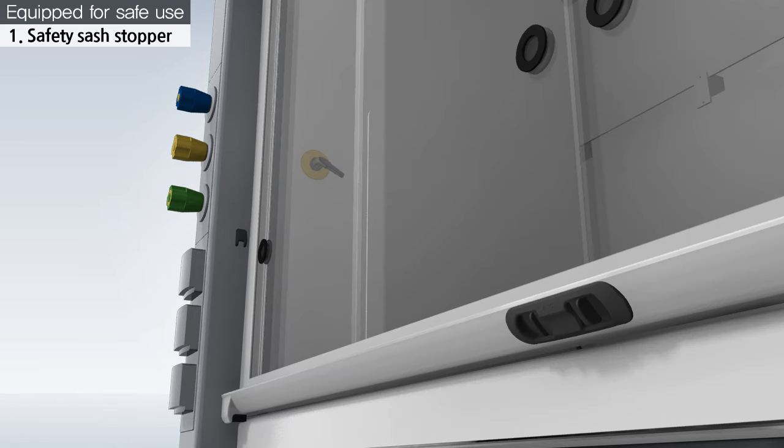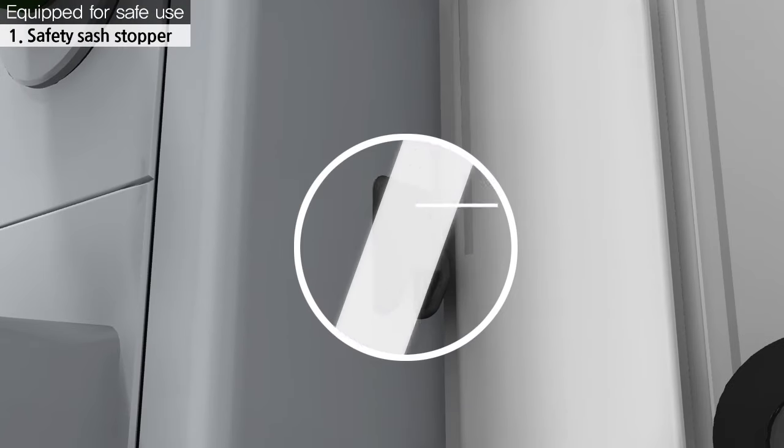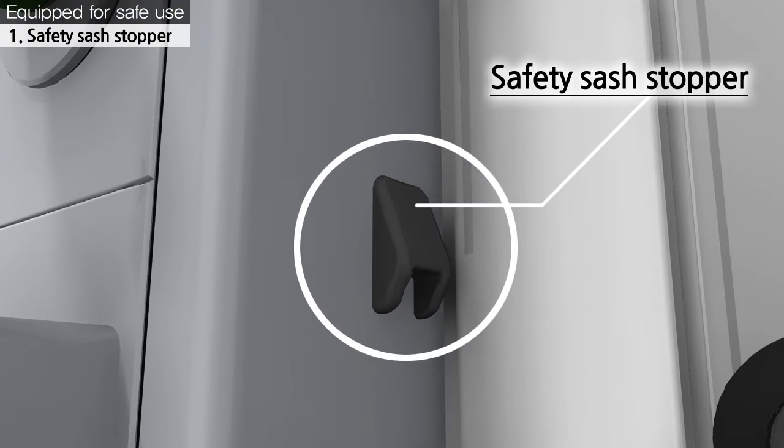In the case of a vertical sash, a safety sash stopper is installed with a height of 500 millimeters, so it would not exceed the required level during experiments.